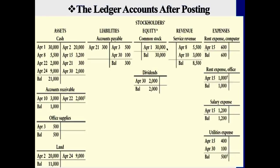The supplies account simply represents the value of supplies still held by the corporation. For the land account, the debit side shows $20,000 representing the piece of land purchased. The right side could represent a company selling another piece of land worth $9,000 — these could be separate pieces of land, all within the same land account. So if you purchased land for $20,000 and sold a portion worth $9,000, the overall land value is $11,000 after this month.